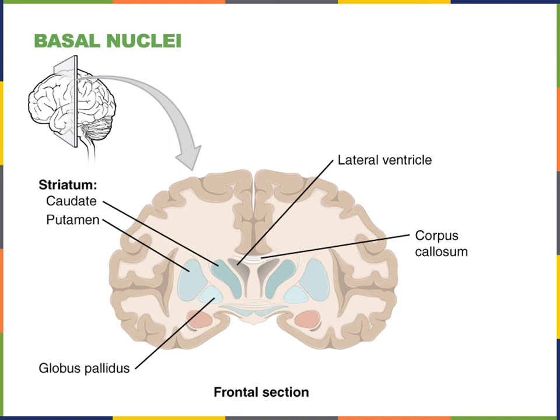Basal nuclei in the cerebrum contribute to motivation of motor control. They receive input from the cerebral cortex and then send input back to the cerebral cortex to help regulate the motivation for motor commands to come out of the cerebral cortex.